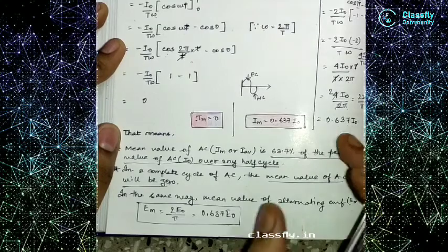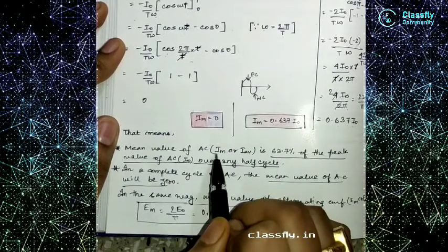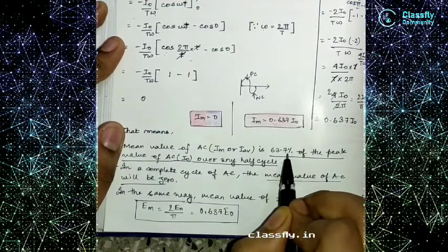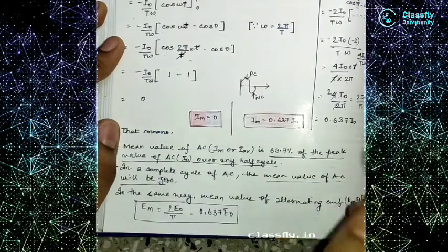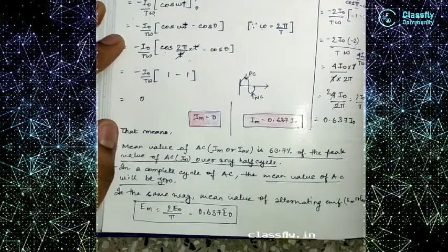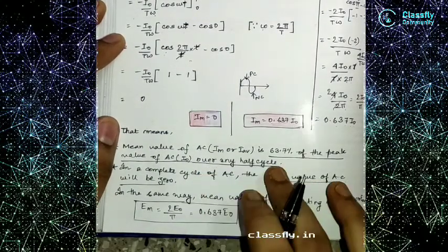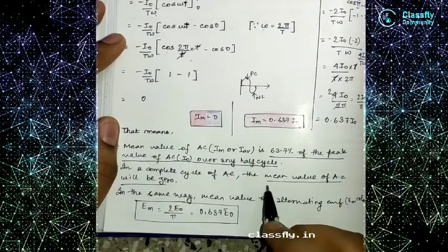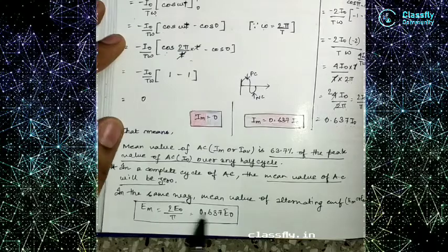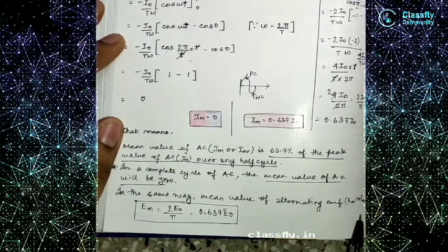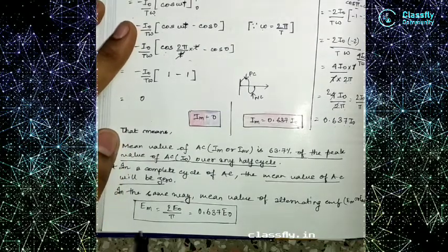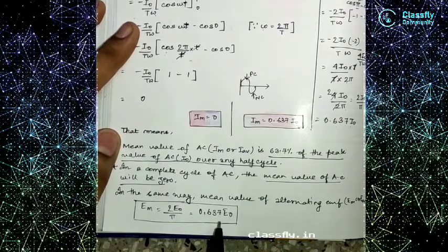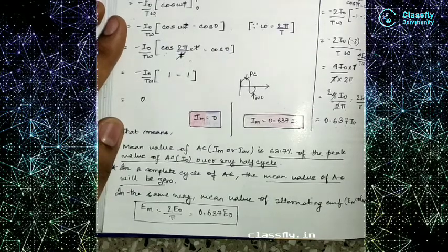To summarize: the mean value of AC, written as I_m or I_av, is 63.7% of the peak value of AC — that is, 63.7% of the maximum value — over any half cycle, either positive or negative. But in a complete cycle of AC, the mean value will be 0. In the same way, the mean value of alternating EMF, E_m or E_av = 2E₀/π = 0.637 E₀. This applies to both alternating current and alternating EMF.